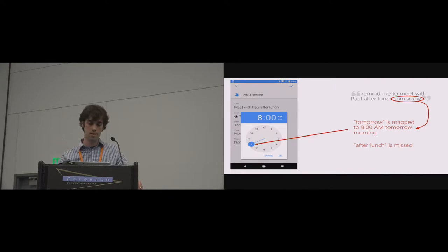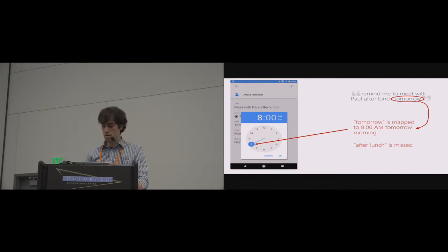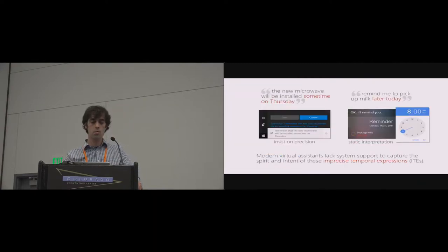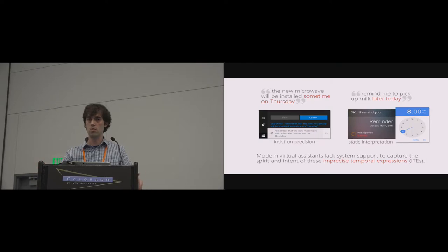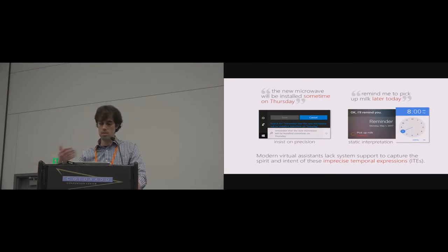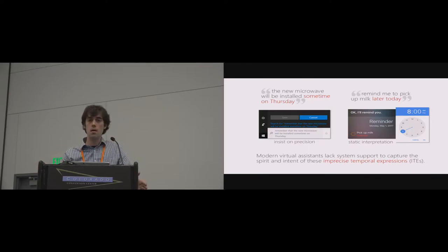Google Assistant wasn't available when we started this work, but we can try the same thing there. I asked Google Assistant to remind me to meet with Paul after lunch tomorrow. For a similar reason, that gets mapped to 8 a.m. tomorrow morning — it missed the phrase 'after lunch.' The point I want to drive home is that when we speak about time in natural settings, we use rich language, often laced with uncertainty.